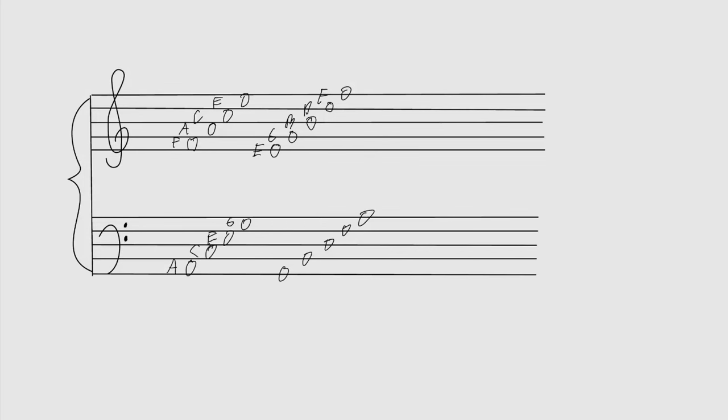In the bass clef, the spaces are A, C, E, G — 'All Cows Eat Grass.' You can also make up your own acronym; a lot of students remember better that way. The lines in the bass clef are G, B, D, F, A — 'Good Boys Do Fine Always.' The most important of all these notes is middle C, sitting on a ledger line between the two staves. Middle C is the C most in the middle of the piano and acts as the midway point between the treble and bass clefs.